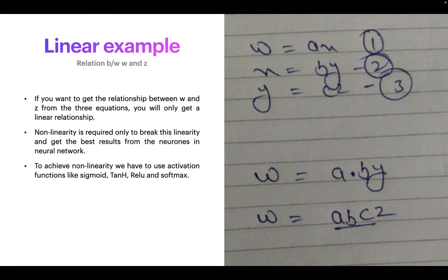So there is a direct or linear relationship between w and z. This should not happen in the case of neural networks. According to these equations, we're achieving linearity, but that is not recommended to use in neural networks.